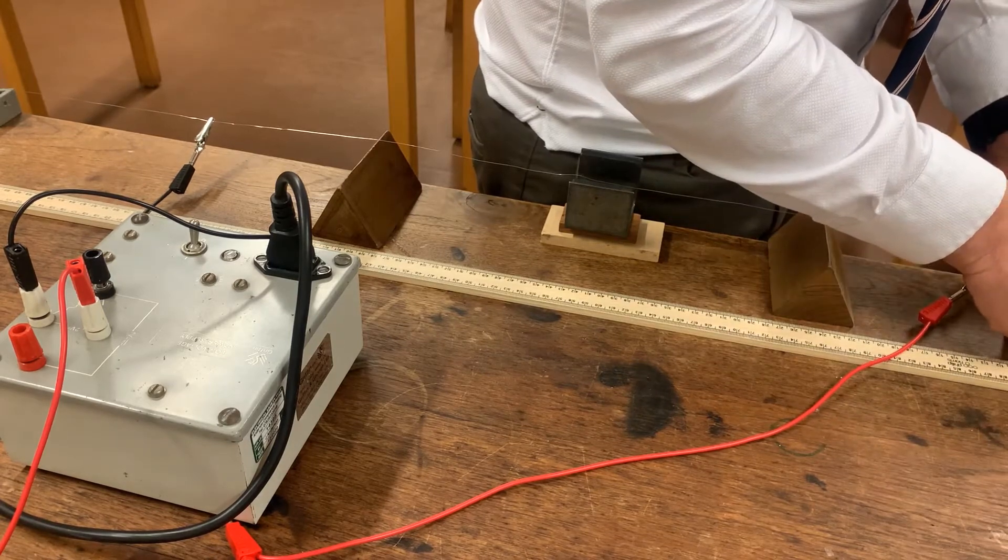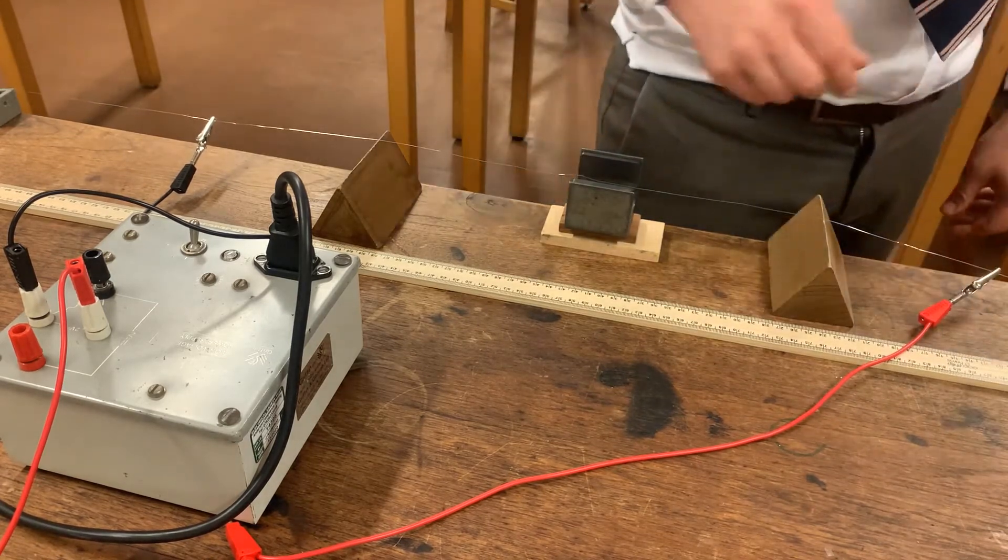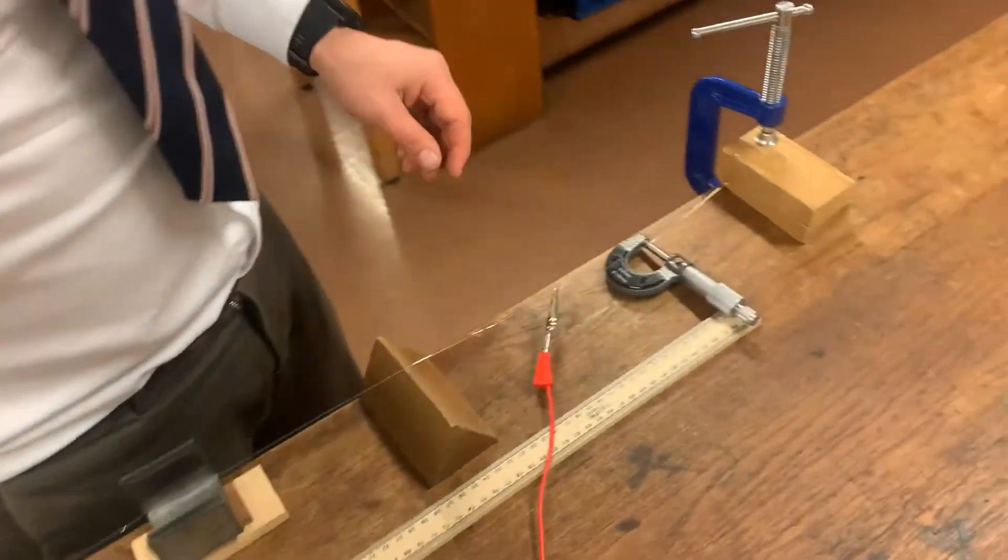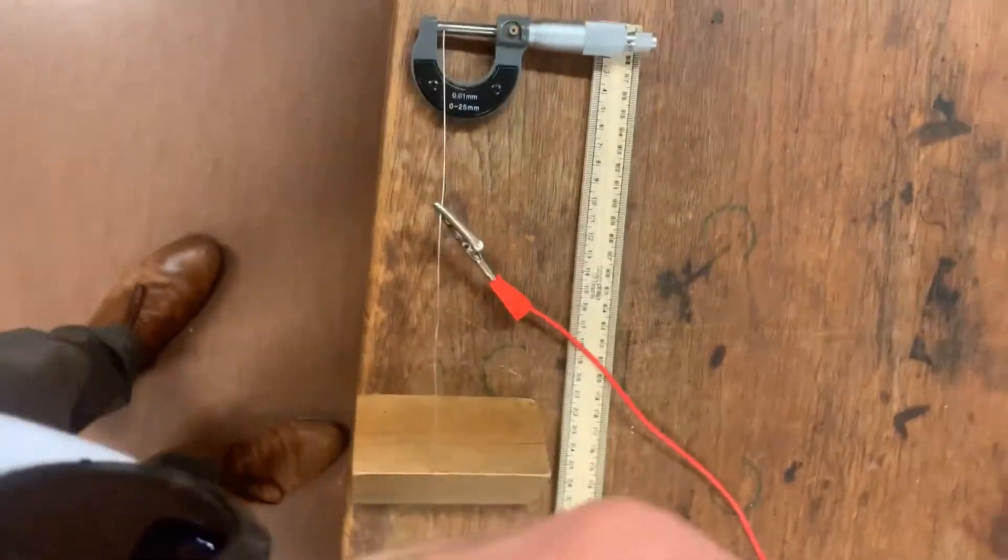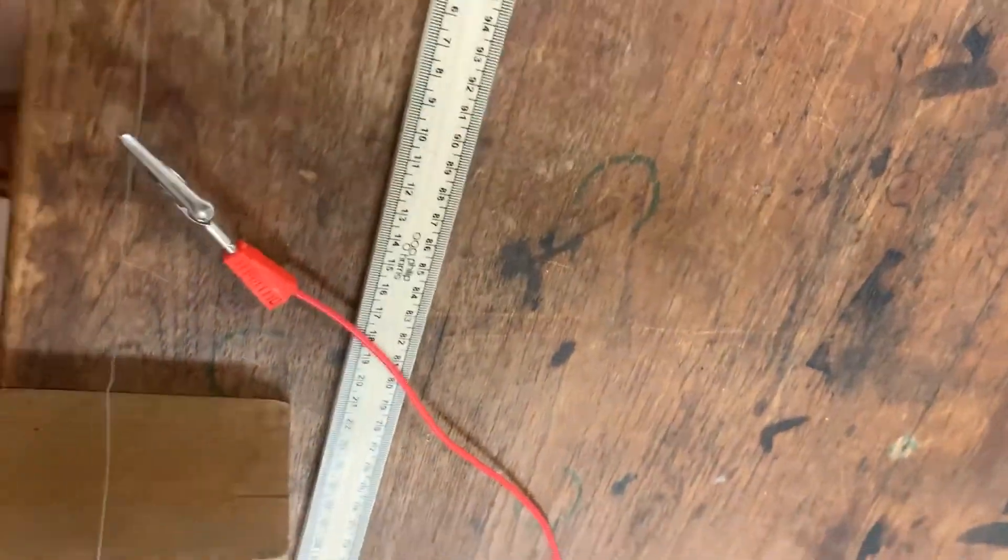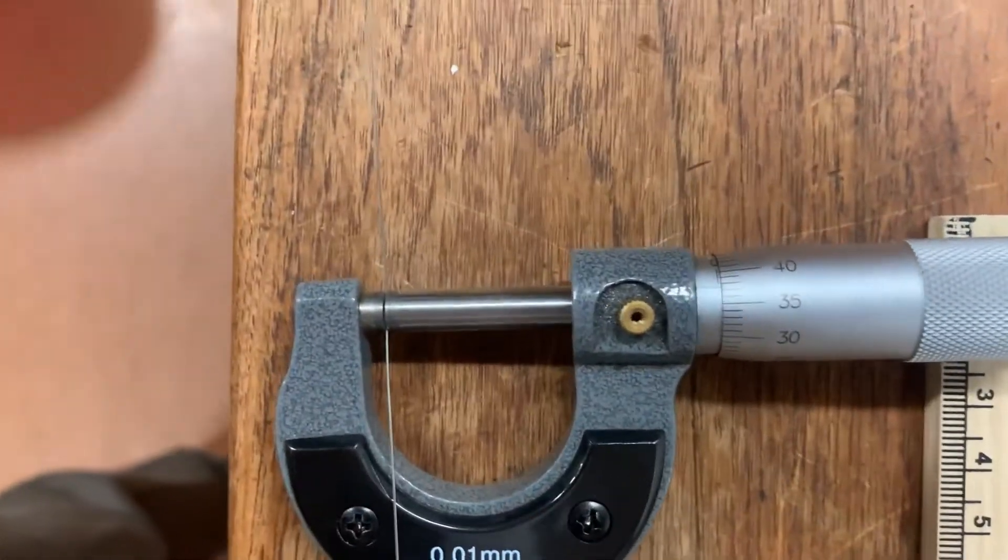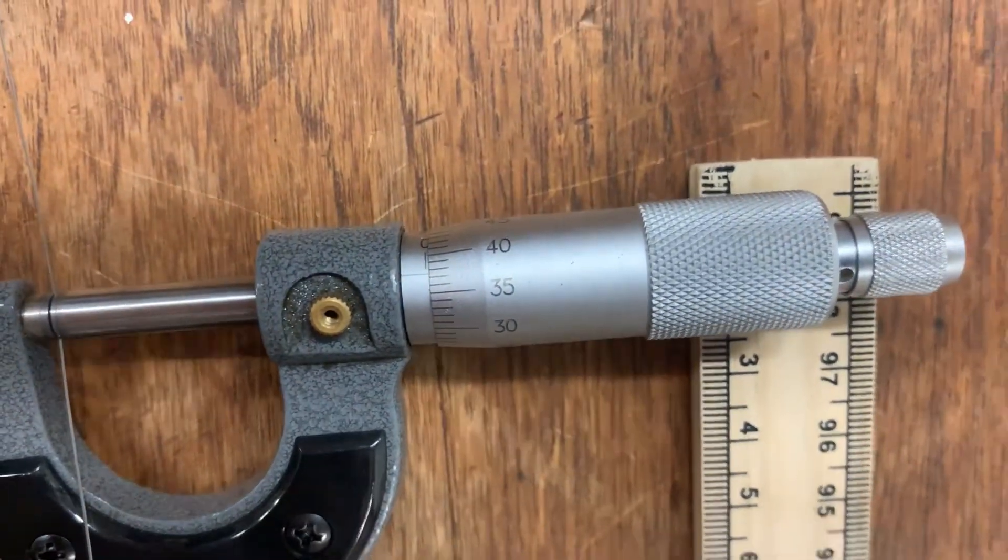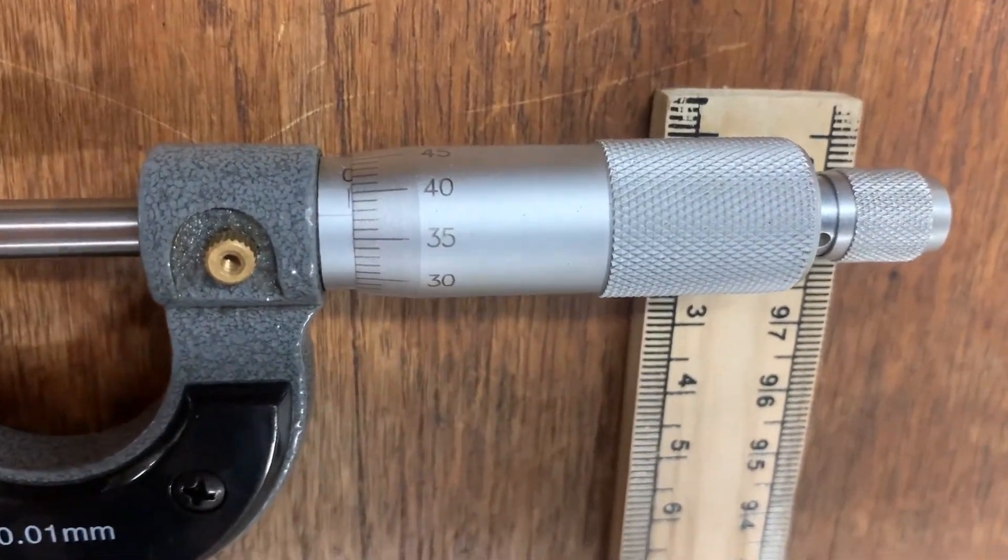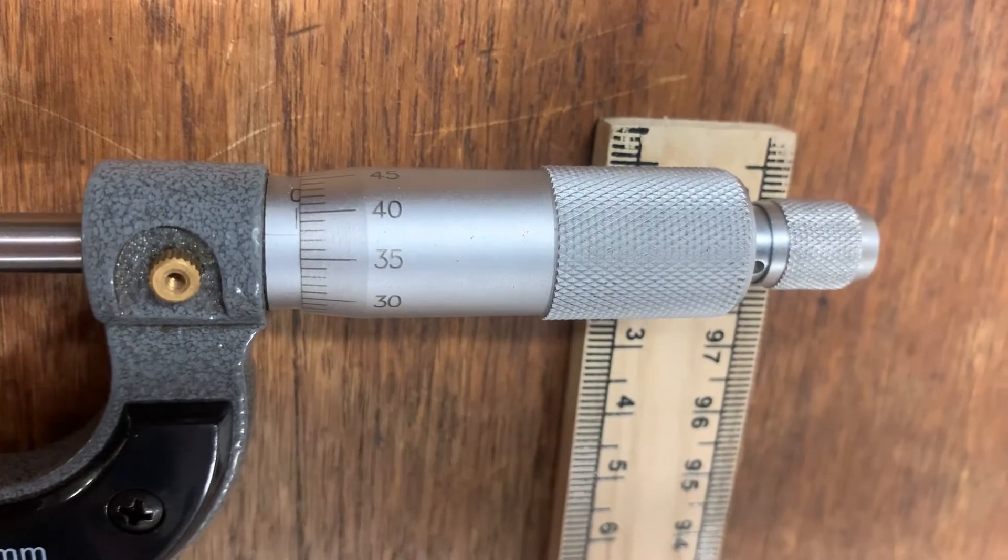And what I'm going to do is just close the jaws onto the wire. I'm going to lay it down gently and bring the video so that you can see the micrometer scale. So you can see the micrometer scale there. You can read off the diameter at that point, as I'm going to do now.